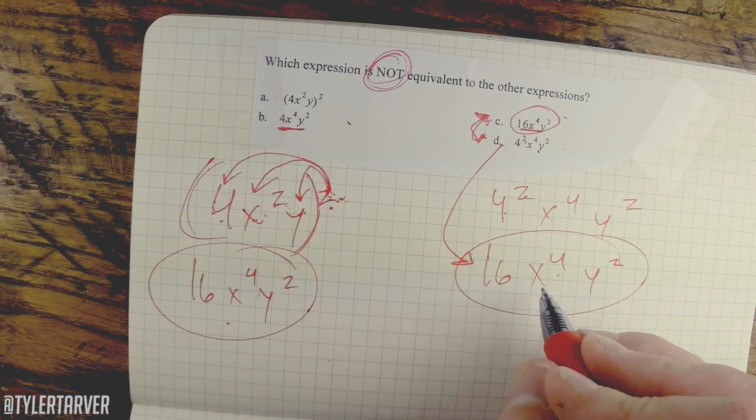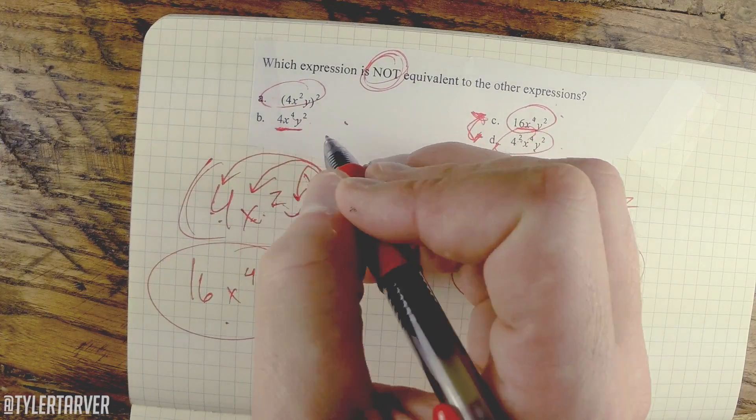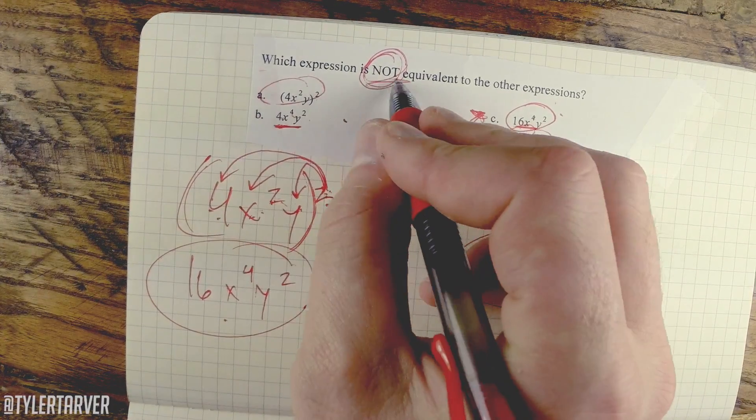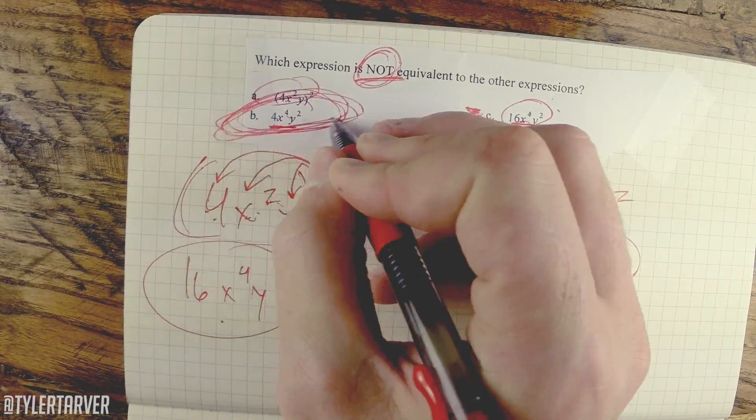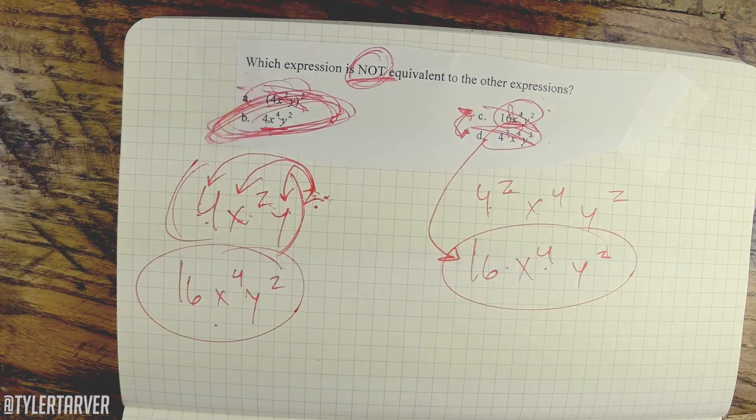So, we do know that these three are all the same and this one's wrong. So you're like, well, I can't circle all three. You shouldn't. It said, which is not. So this is actually our correct answer and you're wrong. You're wrong. You're wrong because you're all right. This problem was confusing.